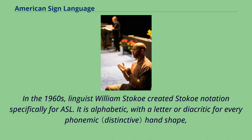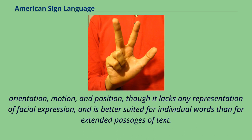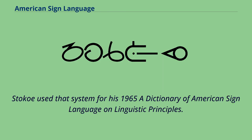Stokoe Notation is alphabetic, with a letter or diacritic for every phonemic handshape, orientation, motion, and position, though it lacks any representation of facial expression and is better suited for individual words than for extended passages of text. Stokoe used that system for his 1965 'A Dictionary of American Sign Language on Linguistic Principles.'